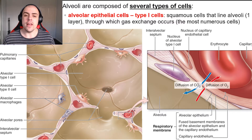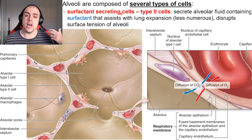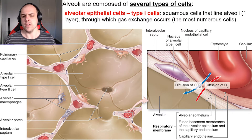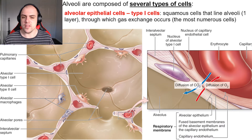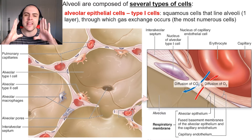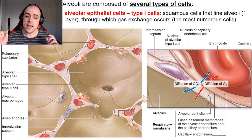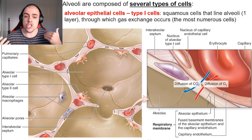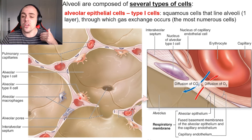Looking at our alveoli, they are comprised of three main types of cells: Type 1 alveolar cells, Type 2 alveolar cells, and alveolar macrophages. Type 1 alveolar cells are simple squamous cells that create the bulk of our alveoli. The reason we want these simple squamous epithelial cells is that we want them to be really thin — only one single thin layer around the alveoli — because we're using them to exchange substances, specifically oxygen and carbon dioxide. We don't want multiple layers hindering that movement.